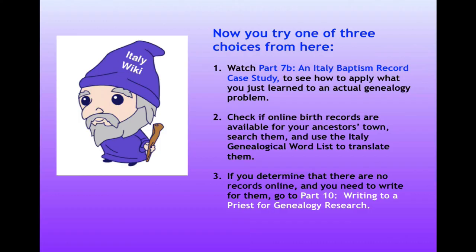Now you can try one of these three choices. Watch the Italy Church Records case study to see how to apply this birth record information to an actual genealogy problem. If you want to check whether online birth records are available for your town in Italy and you find them, search them and use the Italy genealogical word list to translate them. If you determine that there are no records online and you need to write for them, jump ahead to Part 10: writing to a priest for genealogy research.